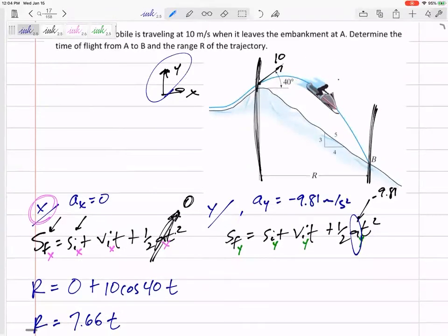I'm choosing up to be positive y. So I'll be consistent, and for all of my position, velocity, acceleration, up is positive.